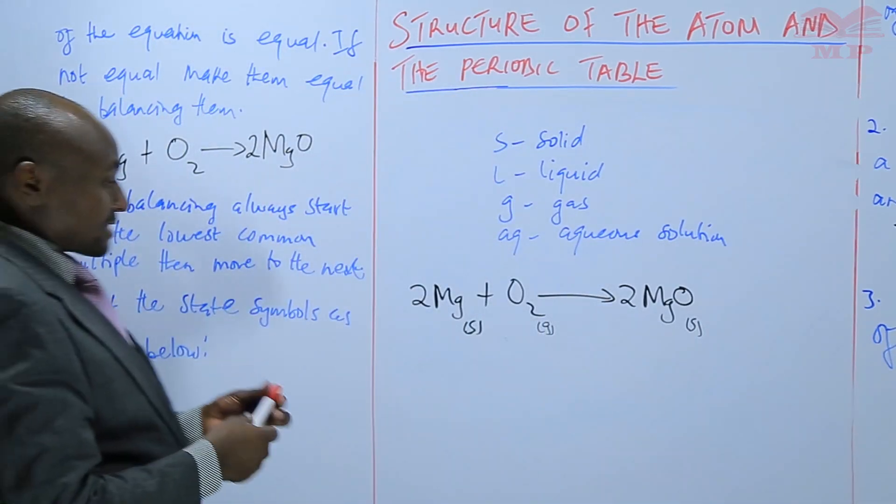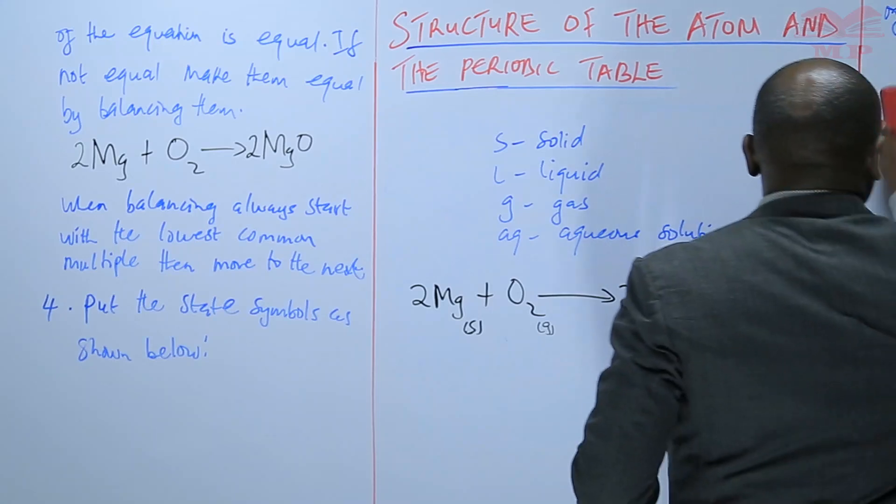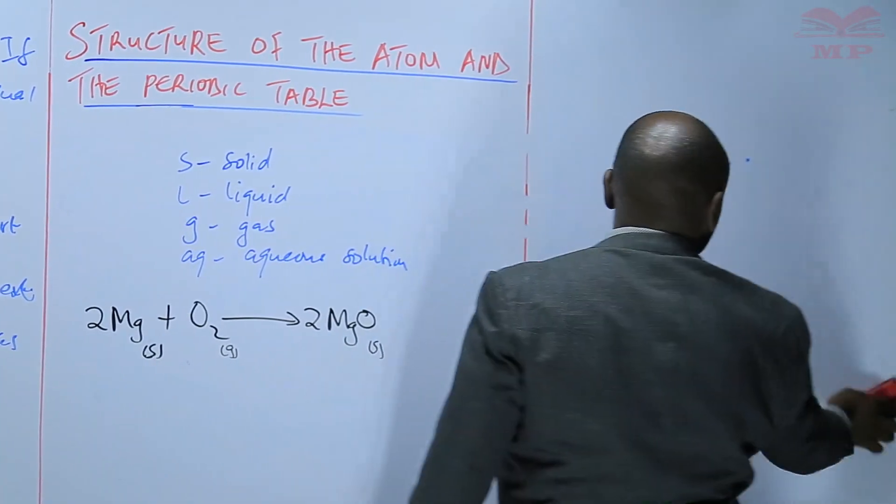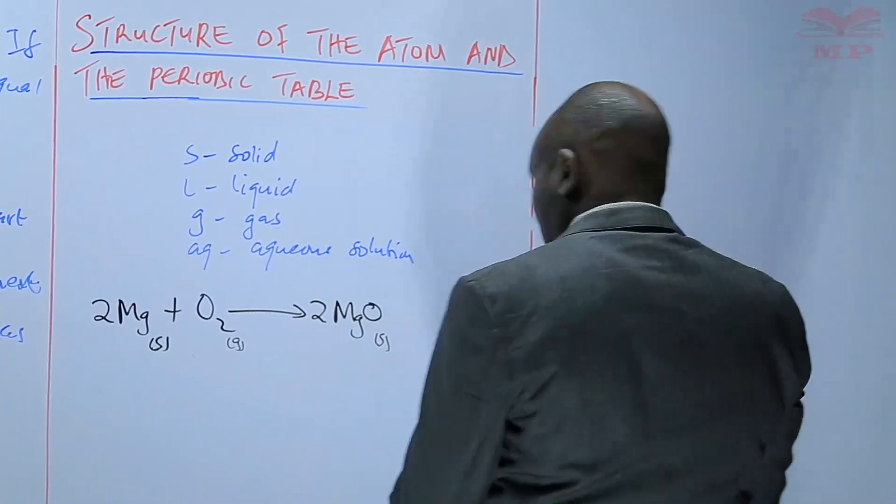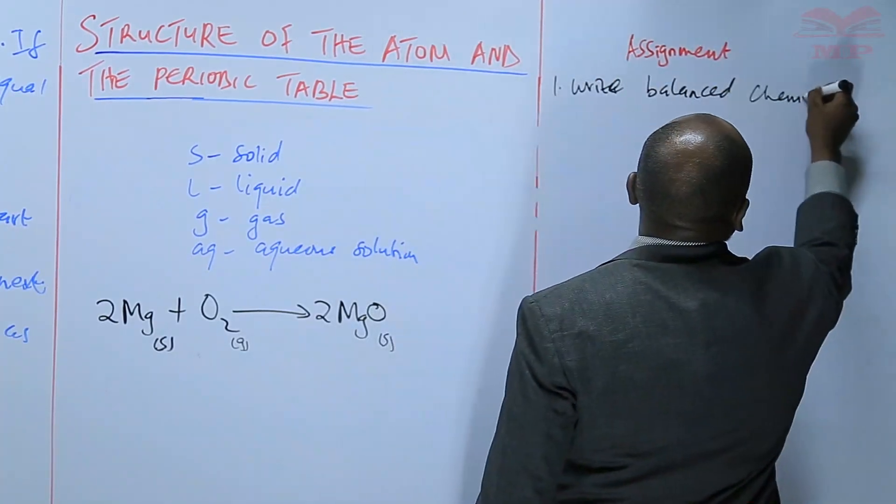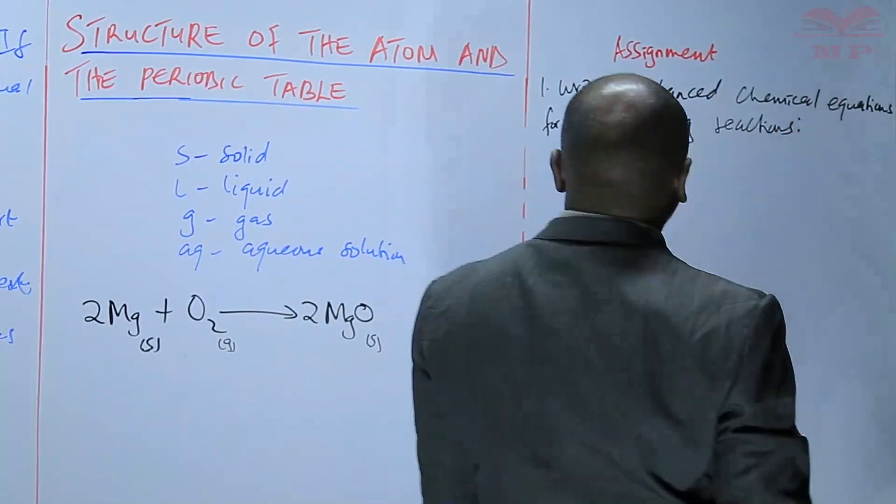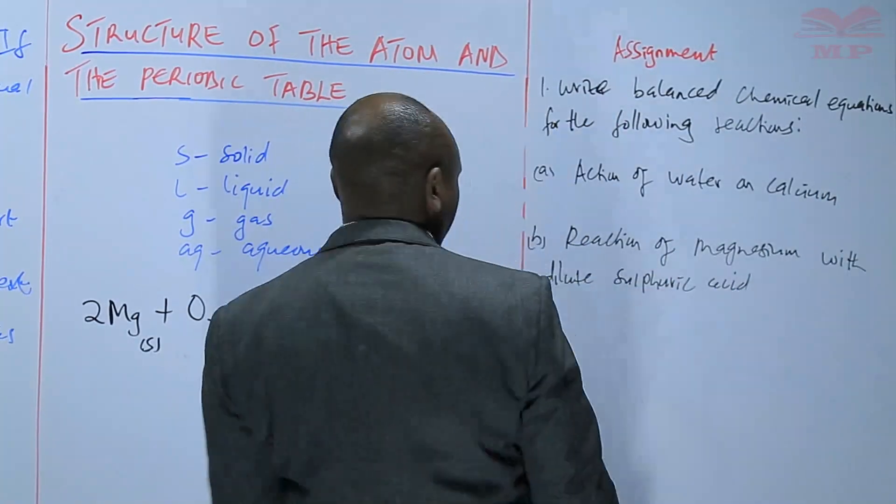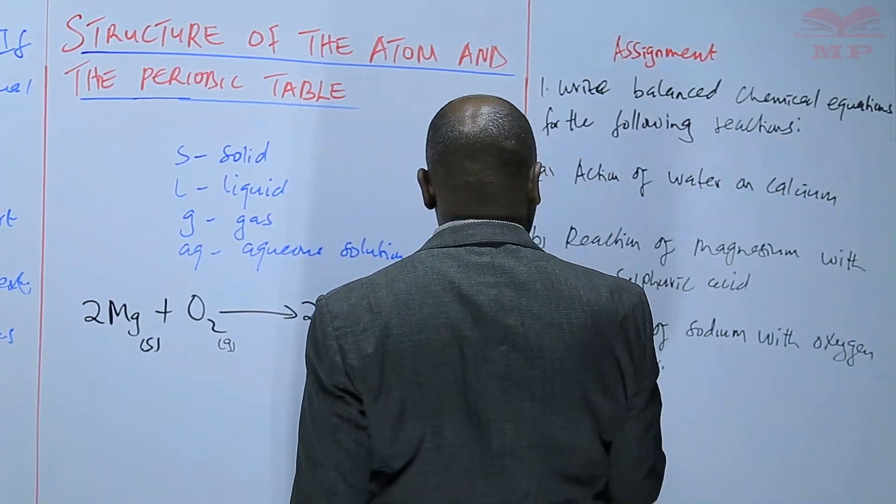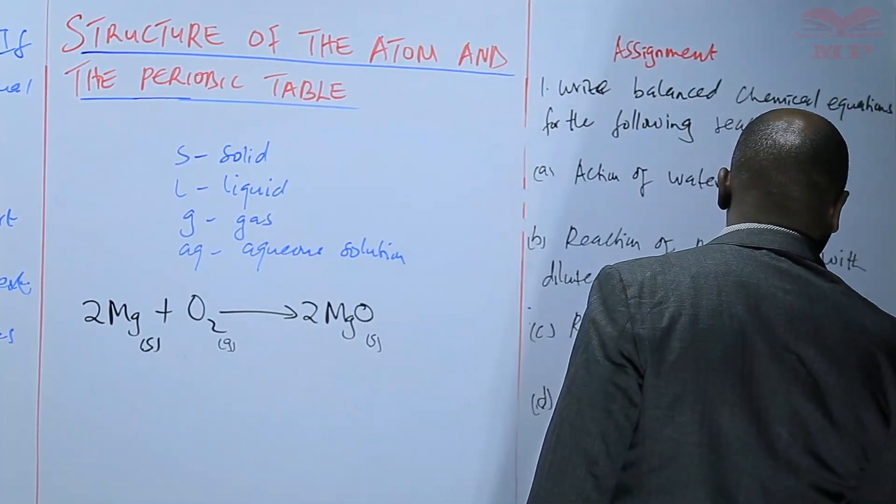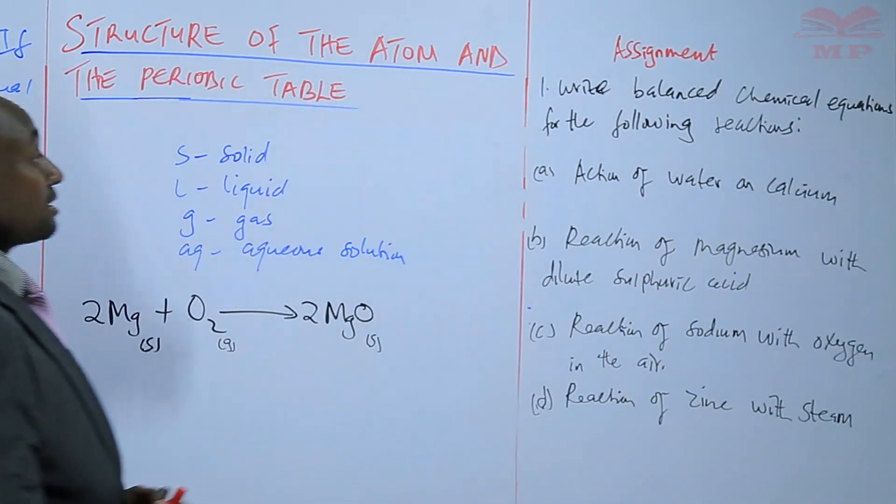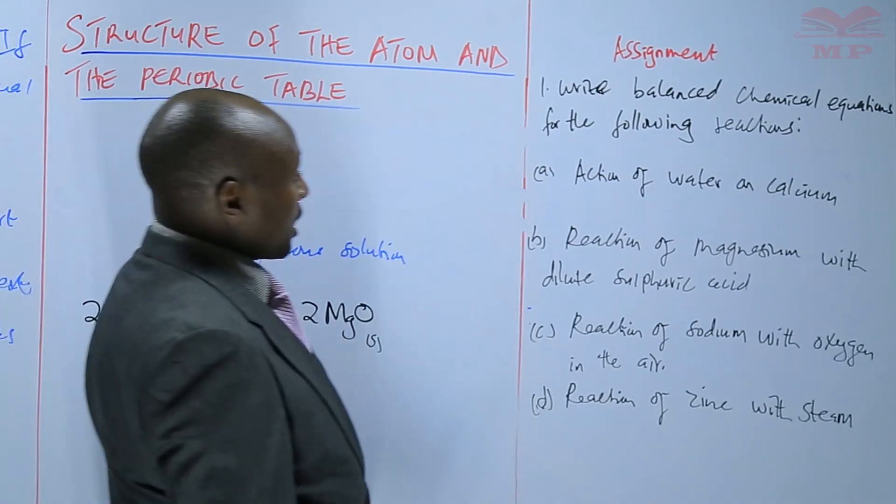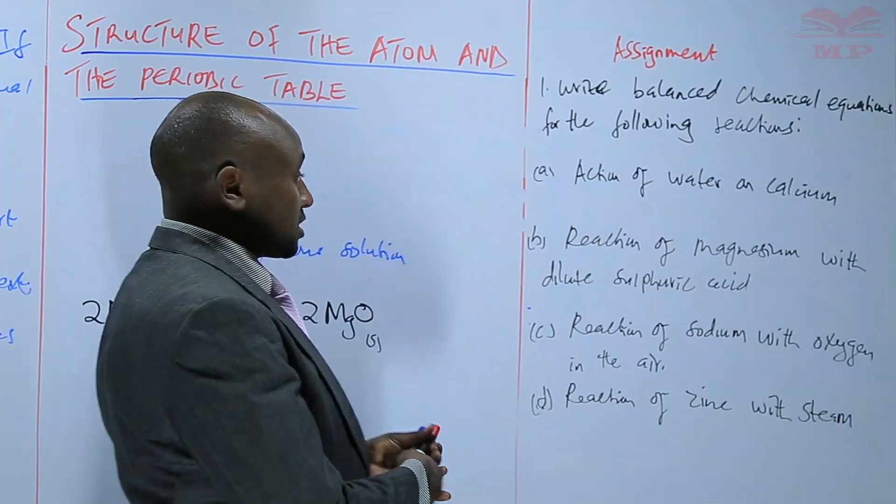So we are going to have an assignment on this, on writing of chemical equations and balancing them. The question is: write balanced chemical equations for the following reactions. A, action of water on calcium. Calcium is a metal.